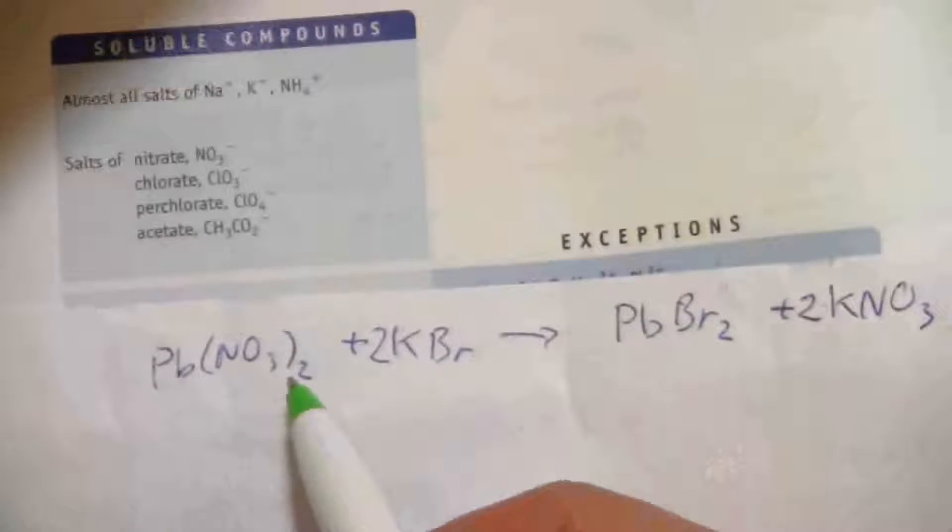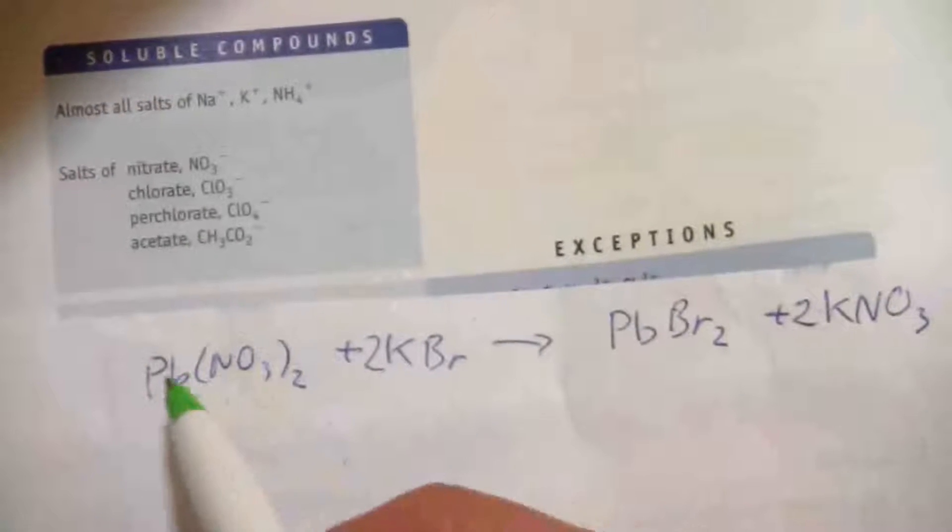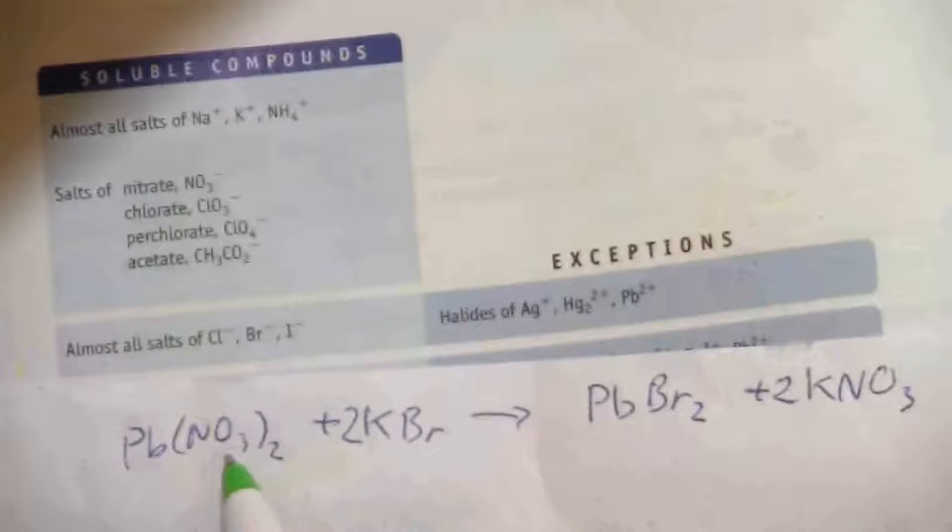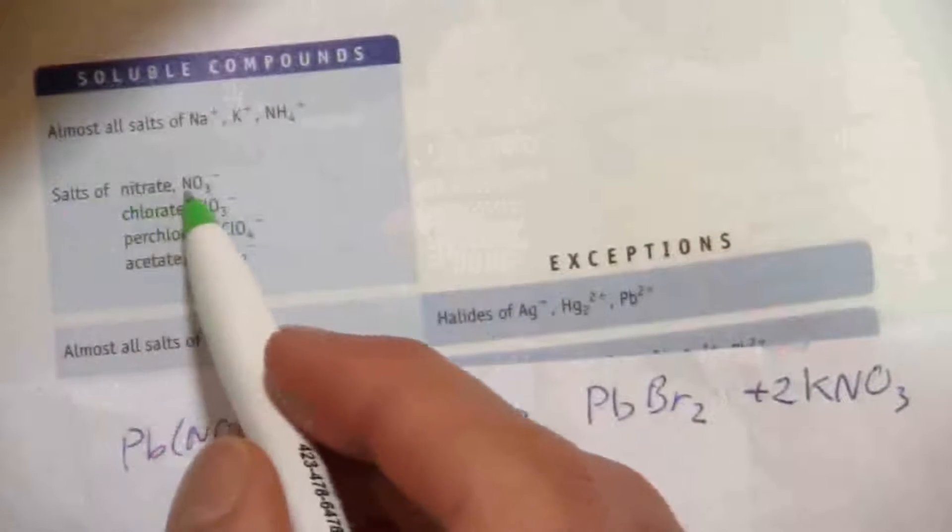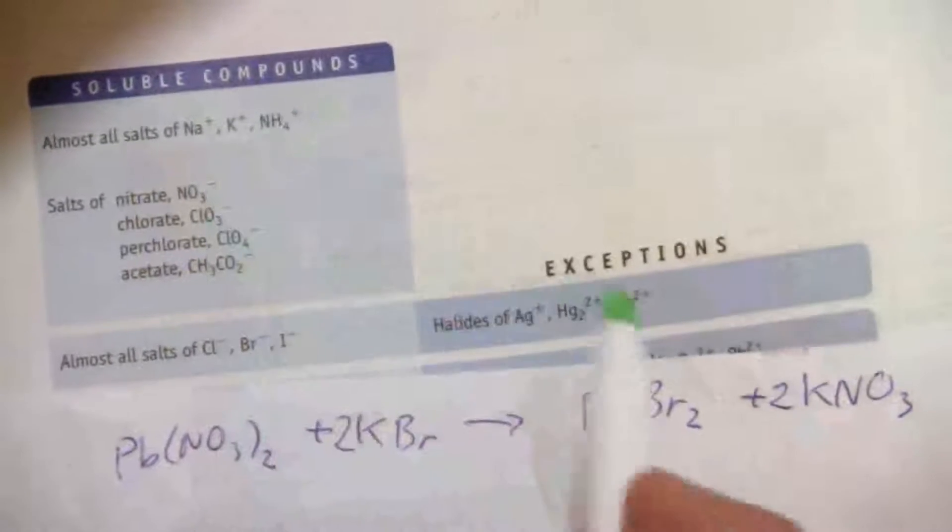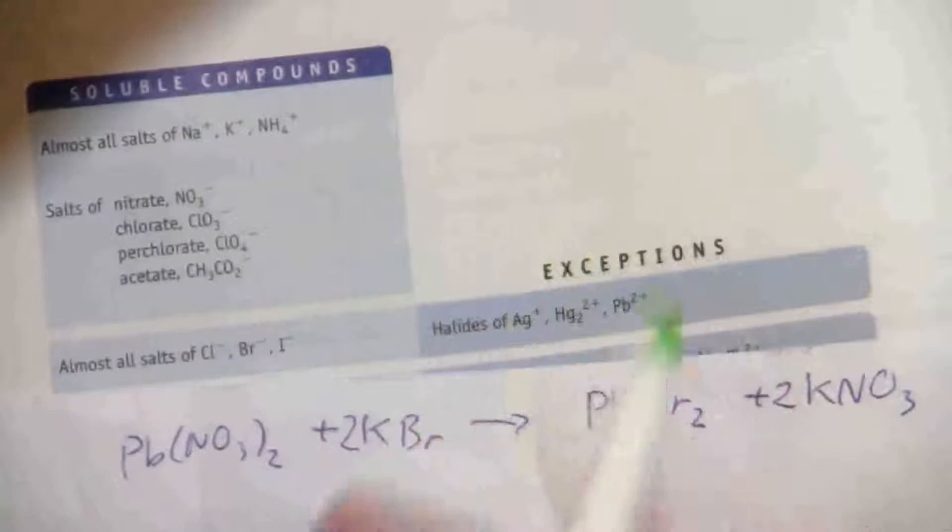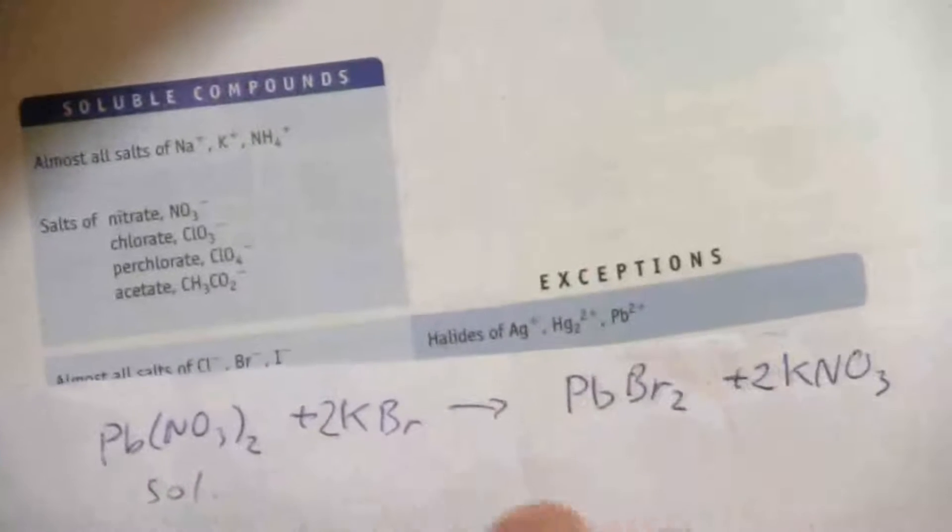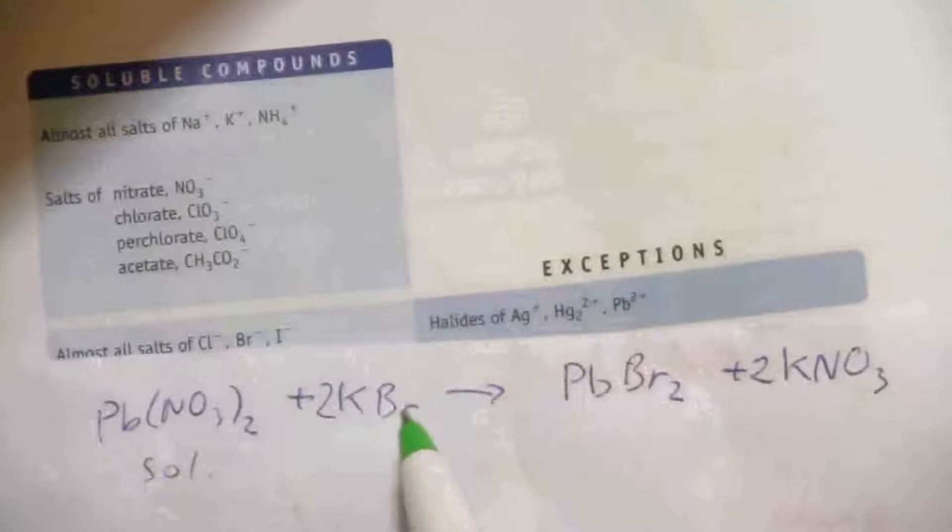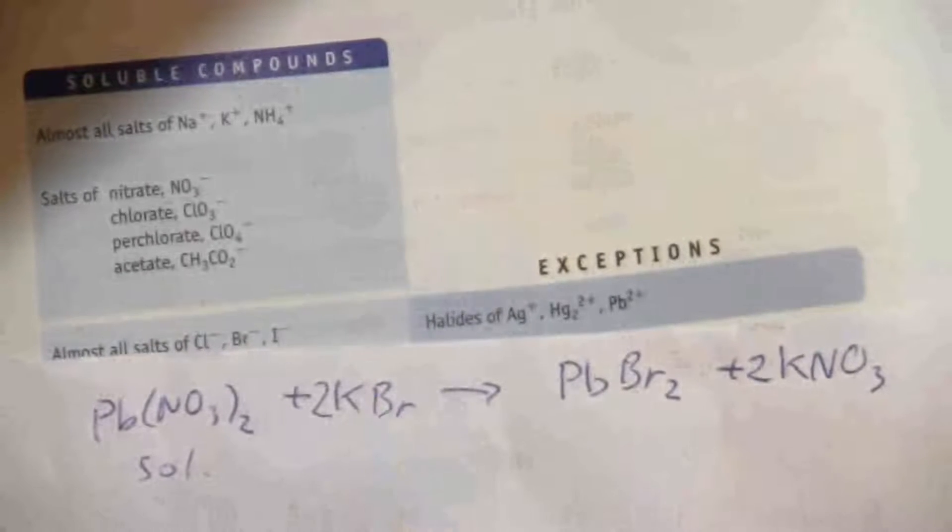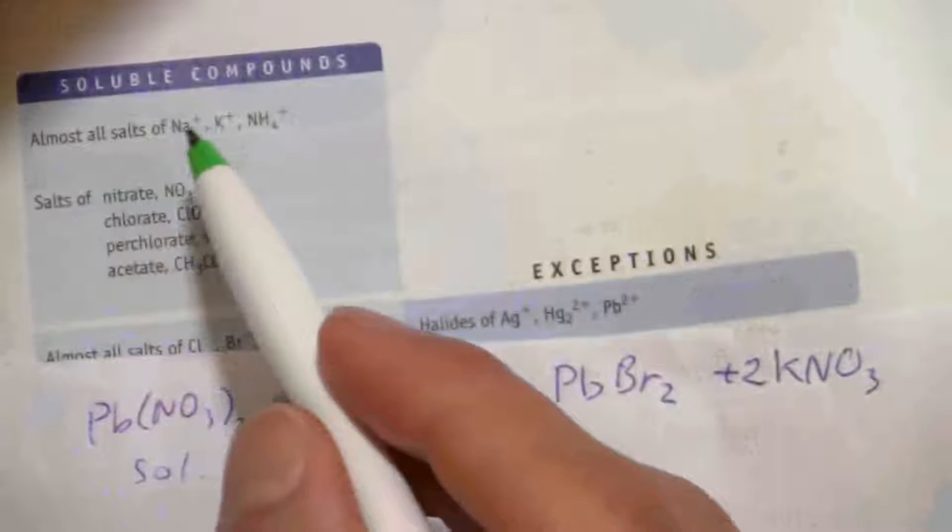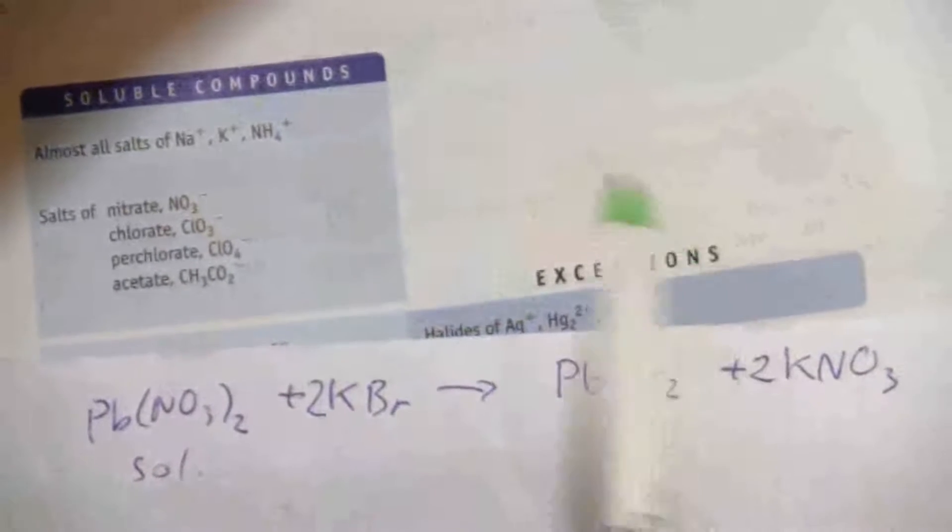But anyway, we'll look at a few of them here. We have nitrate, right? We can look at either of these ions, but we probably won't find lead on here directly. So let's look at the nitrate. Salts of nitrate are soluble compounds, and there aren't exceptions noted for that. So I'm just going to put soluble there. Potassium bromide, again, we can look at either ion. Let's look at the potassium for this one, and we see here almost all salts of sodium, potassium, ammonium are soluble, no exceptions.